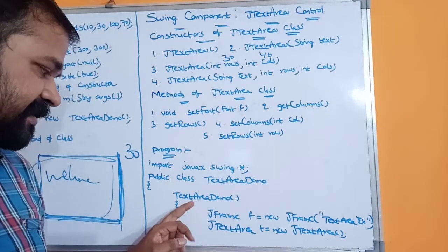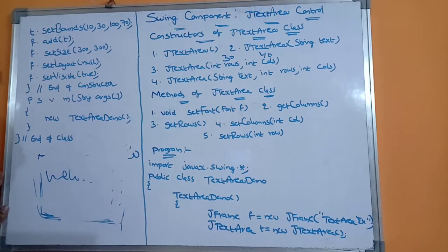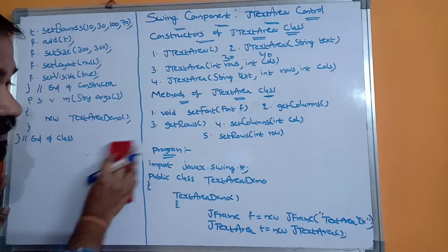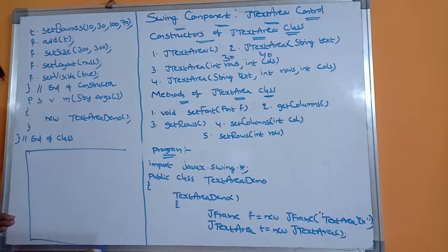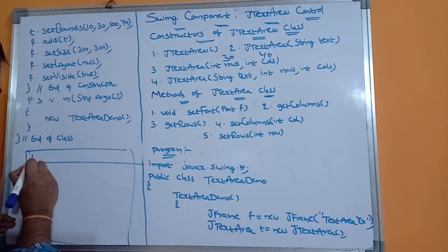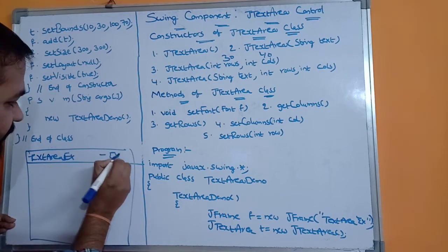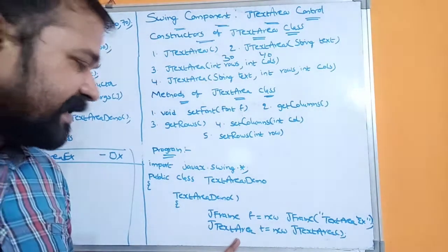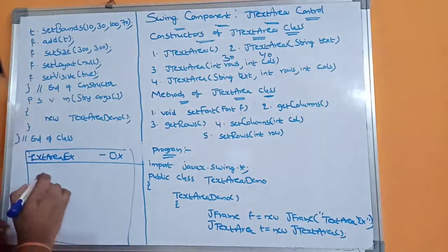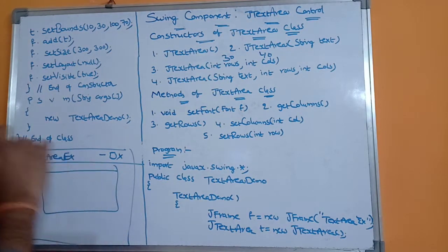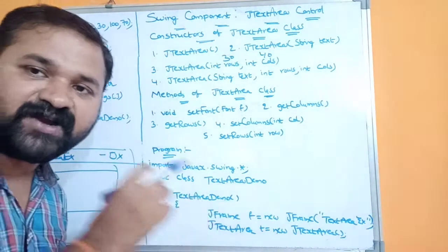Next we have: public class TextAreaDemo. The class body starts with a constructor. First we create the frame: JFrame f = new JFrame("Text Area Example") — the title is 'Text Area Example'. Next we create the text area: JTextArea t = new JTextArea() — this creates a multiline text box with default number of rows and columns.